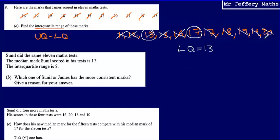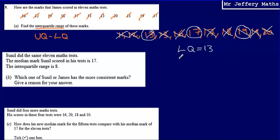Doing the same thing to the right of the median — my median is 17 — so if I go to the halfway point of the numbers to the right, that's going to be three quarters of the way along this list. Crossing one off from each end, I can see that is going to give me 19 as my upper quartile.